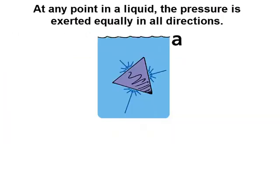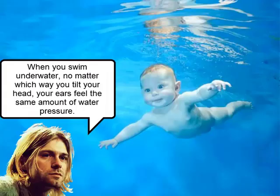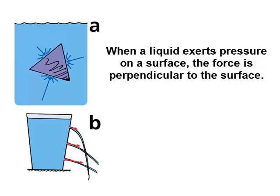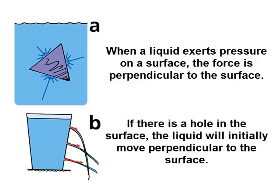At any point within a liquid, the forces that produce pressure are exerted equally in all directions. When you're swimming underwater, no matter which way you tilt your head, your ears feel the same amount of water pressure. When the liquid is pressing against a surface, there's a force from the liquid directed perpendicular to the surface. If there's a hole in the surface, the liquid initially will move perpendicular to the surface, and gravity causes the path of the liquid to curve downward.